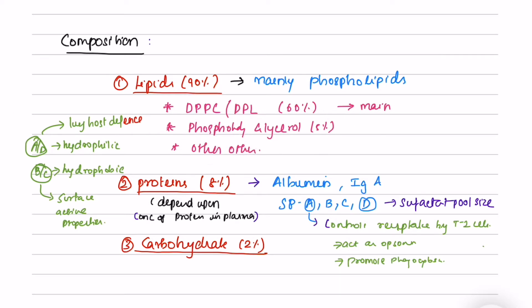The protein component is mainly made up of albumin, IgA, and surfactant proteins A, B, C, and D. This depends mainly upon the concentration of proteins in plasma. Surfactant proteins A and D are hydrophilic and play an important role in lung host defense.